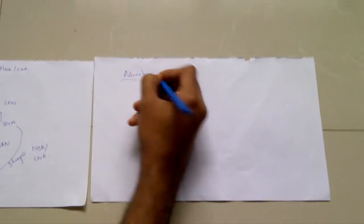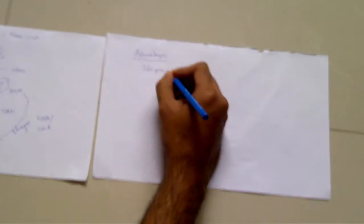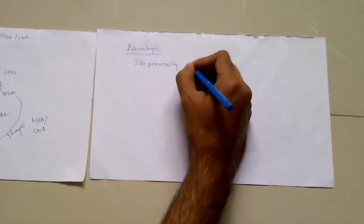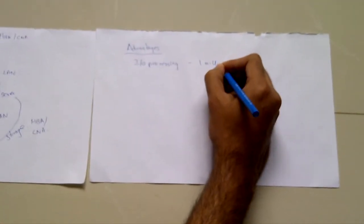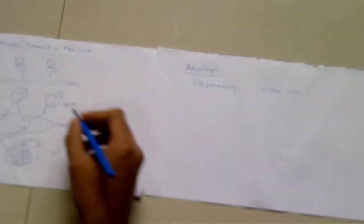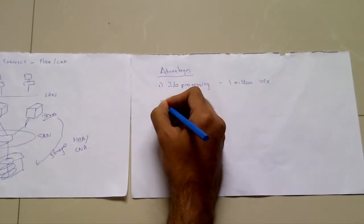Today's HBAs offer 1 million IOPS per port. This is an advantage in today's server virtualization and consolidation environments, as the HBA and CNA frees up your host to perform better IO processing. The second advantage is data buffering.